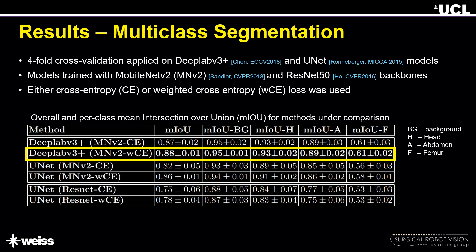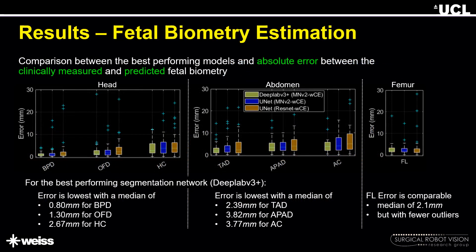We then applied fetal biometry estimation using the best-performing architecture configuration. Fetal biometry estimation results are shown in this slide, where we compare the best-performing segmentation models and report the absolute error between the clinically measured and predicted fetal biometry. Absolute errors in measurements were lowest in the case of DeepLab V3+, which was also the overall best-performing segmentation model.